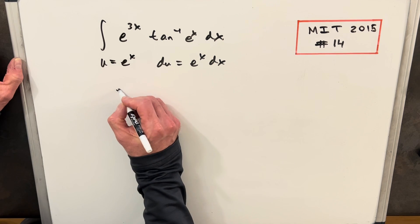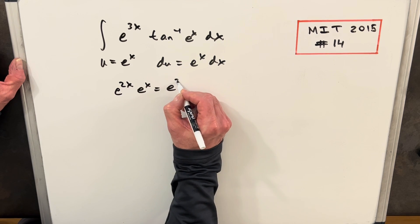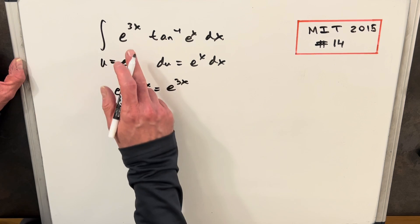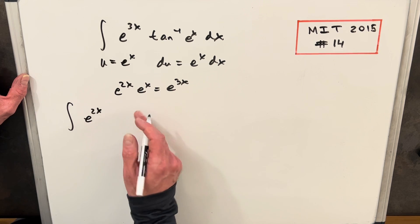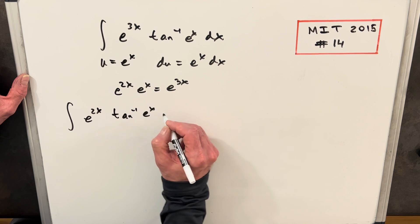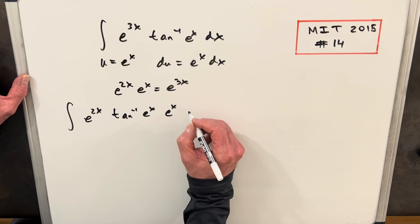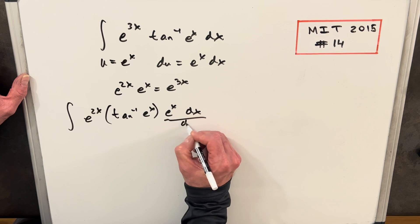Just noticing, we know that e to the 2x times e to the x equals e to the 3x. So what I'll do is separate the e^(2x) and e to the x, and we'll have e^(2x) tan inverse e to the x times e^x dx, just so that we have our du right here.